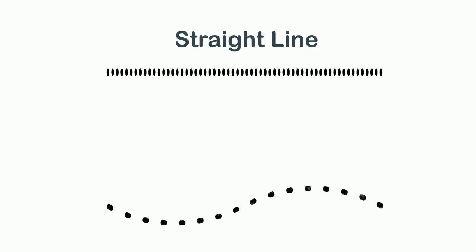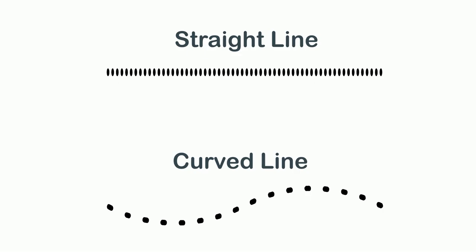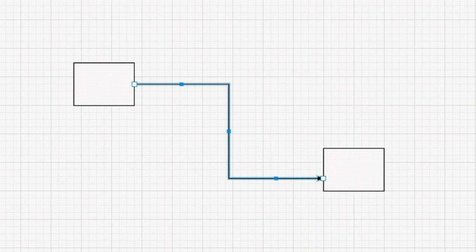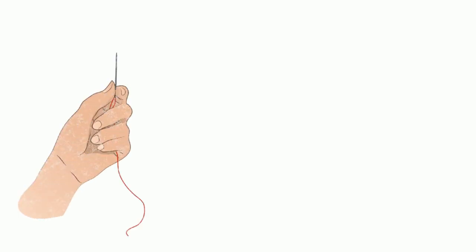If you join the dots like this, it makes a straight line. But if you join them like this, it makes a curved line. A straight line does not have any turns or bends, but a curved line does.